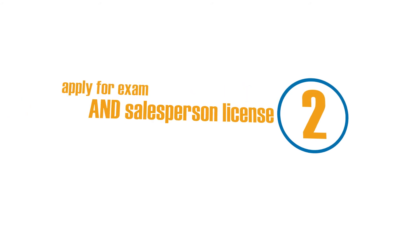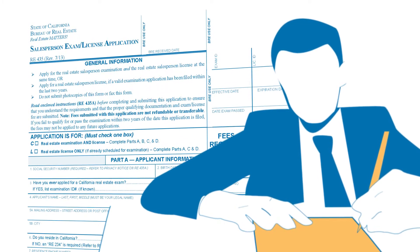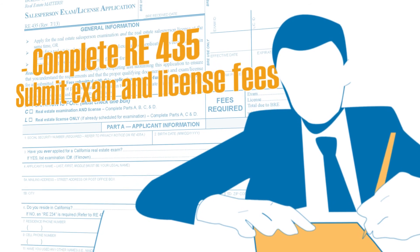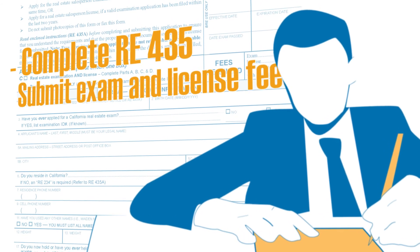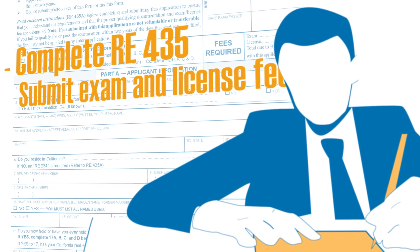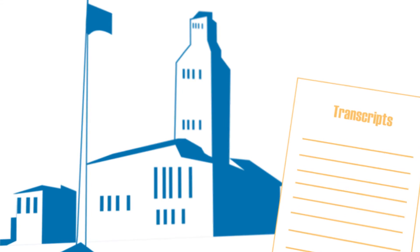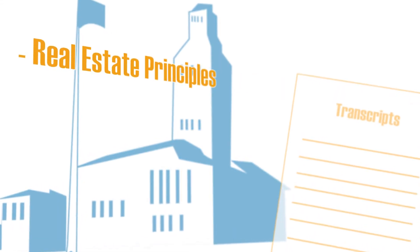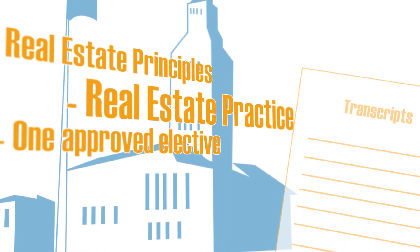The second way is to apply for the salesperson exam and salesperson license at the same time. Complete salesperson exam and license application form RE-435. Submit both the exam fee and the license fee — refer to form RE-206 for current fees. Submit certificates or copies of an official transcript showing completion of a course in real estate principles, a course in real estate practice, and one additional course from the list of approved electives.